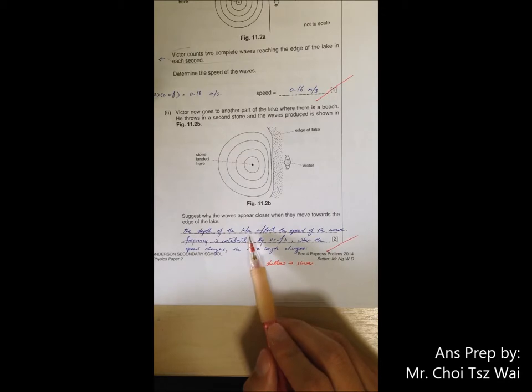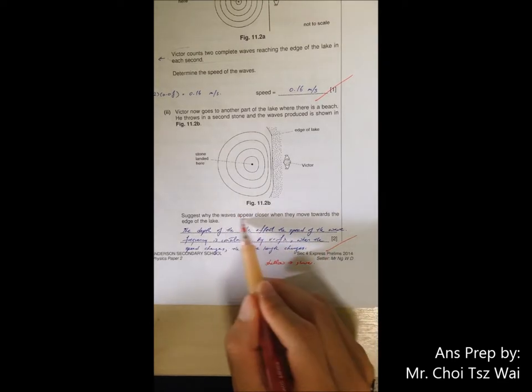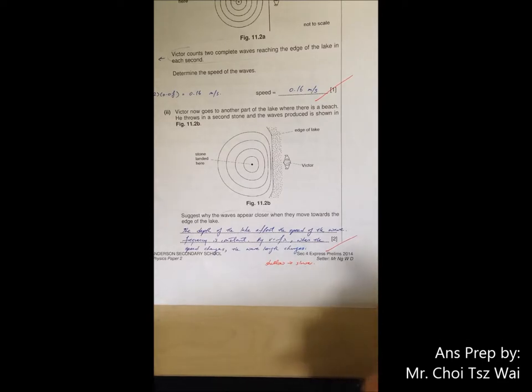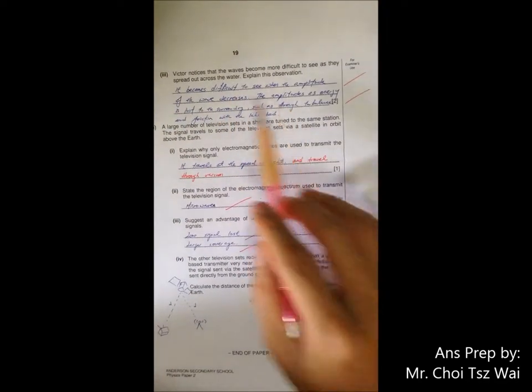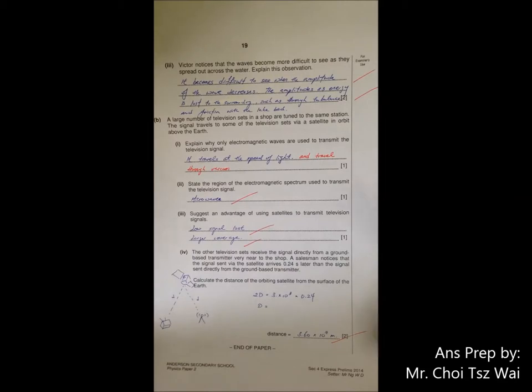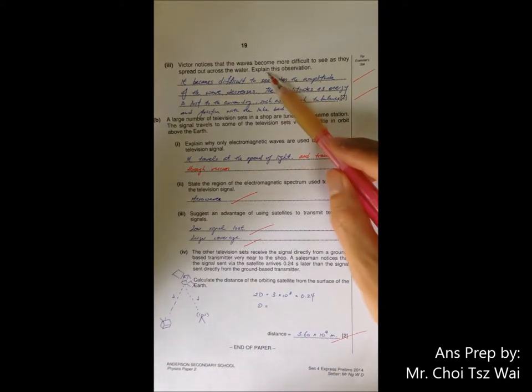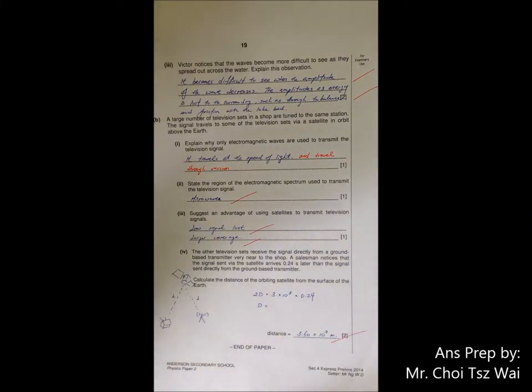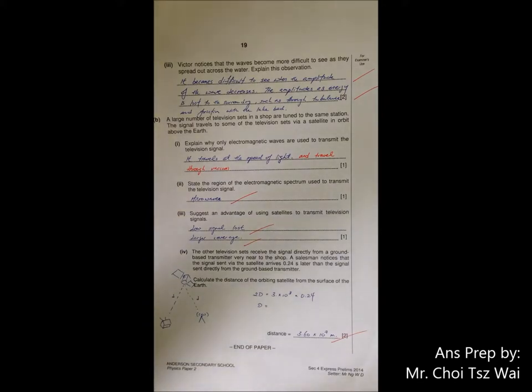So you have to be specific. So my answer here is not specific enough. I didn't mention that the shallow it gets, the slower it gets. Because I have to make reference to this statement. Why the wave appear closer? So the wave appear closer because lambda decreases and lambda decreases because velocity decreases. And why velocity decreases? Because the lake is becoming shallow. Part three. Part three, you have to mention that it is difficult to see because the amplitude of the wave decreases. So you see, you have to relate what you observe with a parameter. So in this case is the amplitude. Then next, the question asks you to explain. So you have to explain why the amplitude is decreasing. And that is because energy is being lost to the surrounding. And you can give a few examples. So for completion sake, you can mention that it is lost due to turbulence. It is lost due to friction with the lake bed.